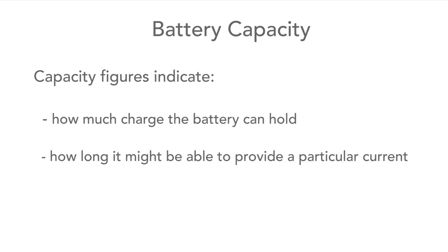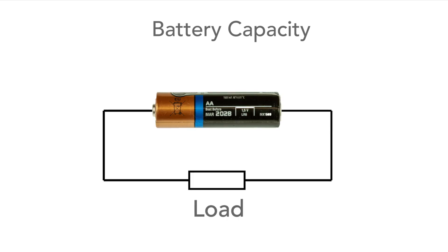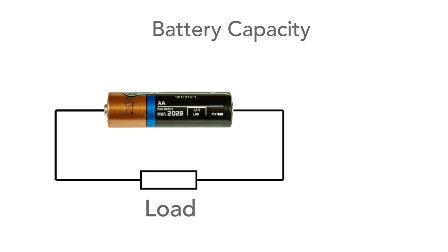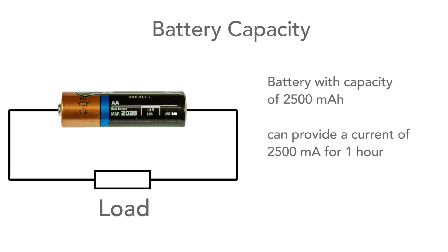For example, if a battery has a capacity of 2500 milliamp hours, then it can provide 2500 milliamps, or two and a half amps, for an hour. Similarly, it can provide 1250 milliamps for two hours, and so forth.